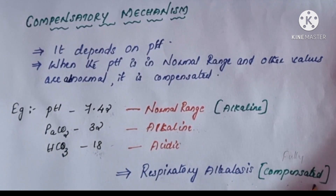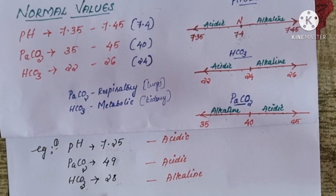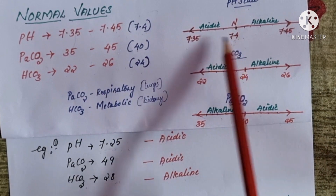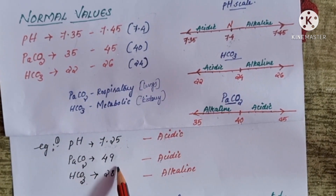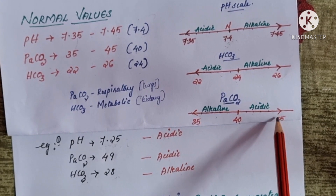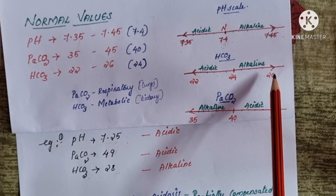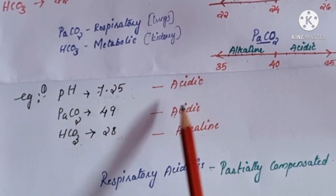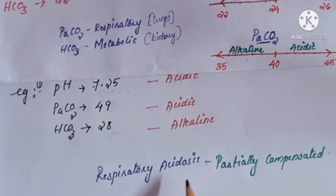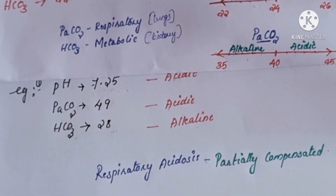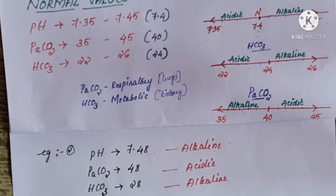Here is another example: pH is 7.25, PaCO2 is 49, and bicarb is 28. pH 7.25 is below the normal range — acidic. PaCO2 is 49, which is above 45 — acidic. Bicarb is 28, which is above 26 — alkaline. pH and PaCO2 are both acidic, so the primary condition is respiratory acidosis. However, the pH is not in the normal range, but bicarb is altered, so this is partially compensated.